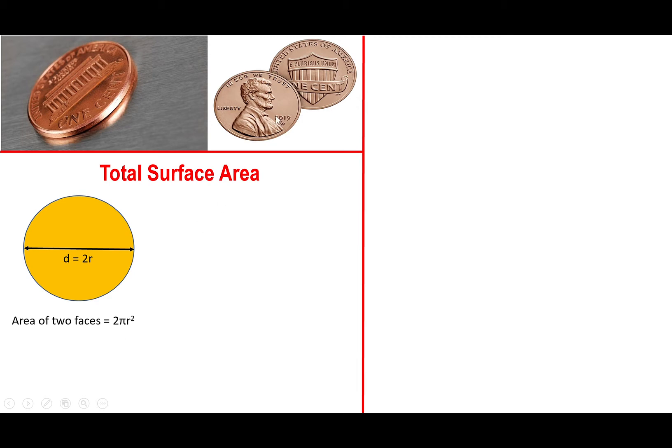But since you have two faces, the front face and the back face, you actually have twice πr² as far as the area of the faces of the penny go. So don't confuse this with the circumference, it looks very similar, but this is twice both faces in terms of the area.